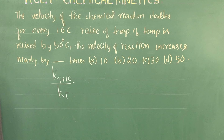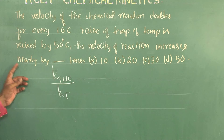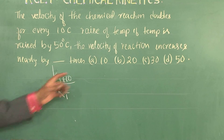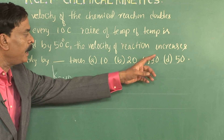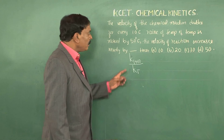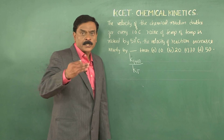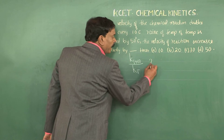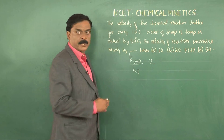If the temperature is raised by 50°C, the velocity of reaction increases by how many times? The options are 10, 20, 30, and 50. For every 10°C rise, the rate constant increases by 2 times in most reactions.